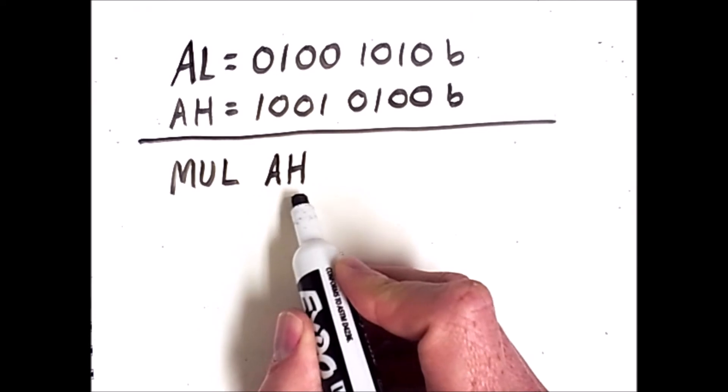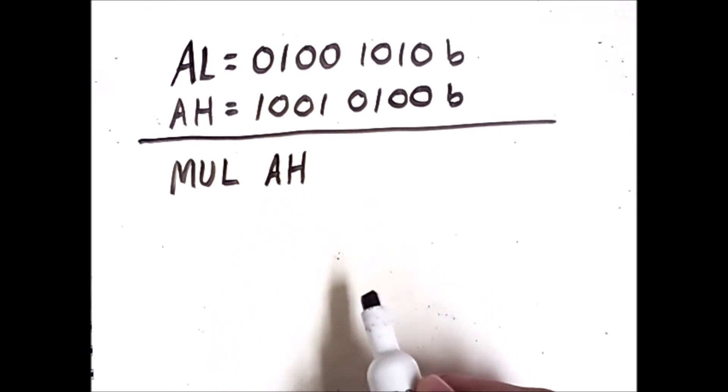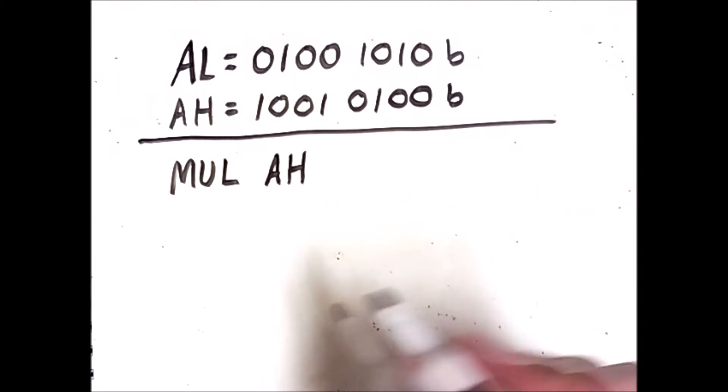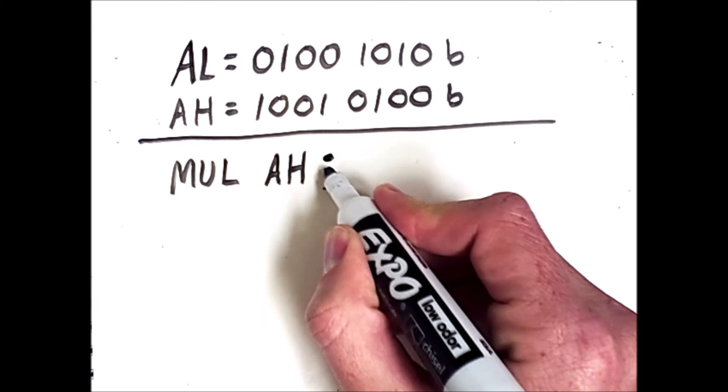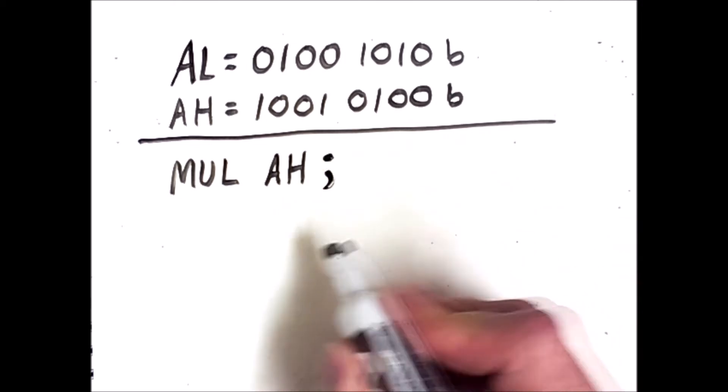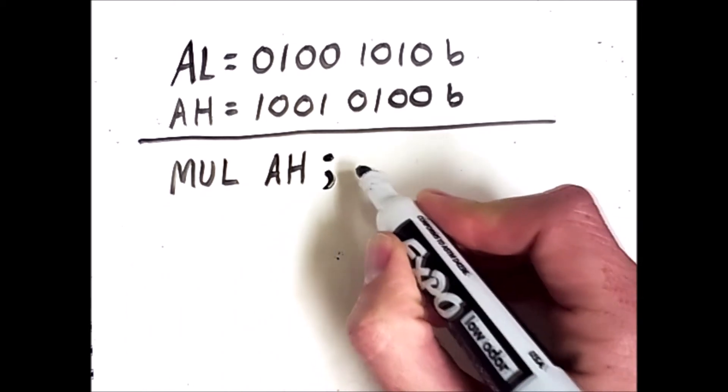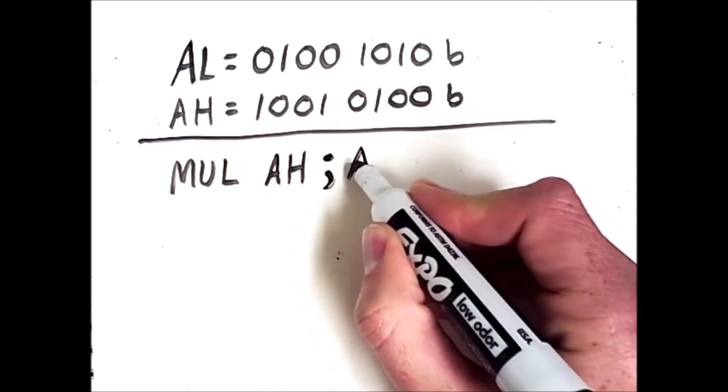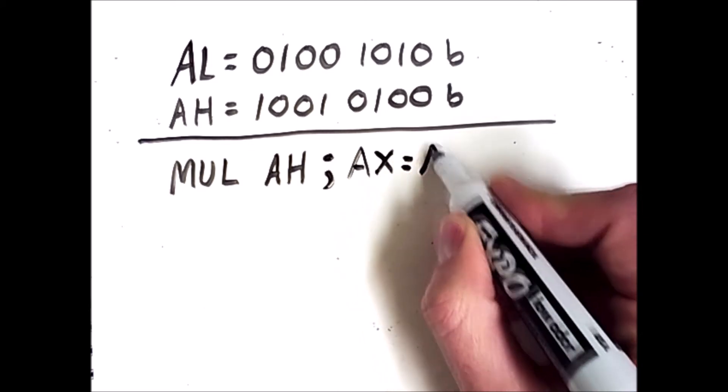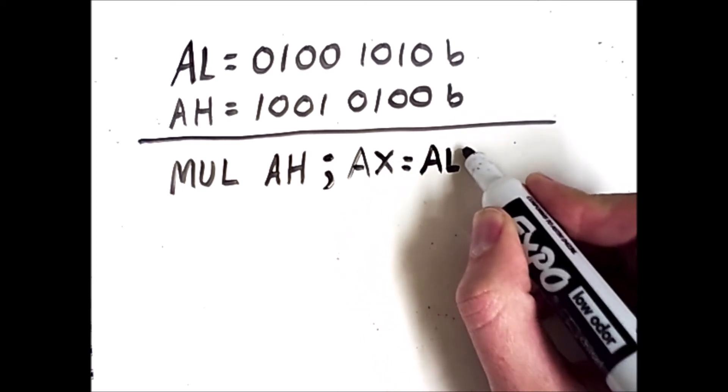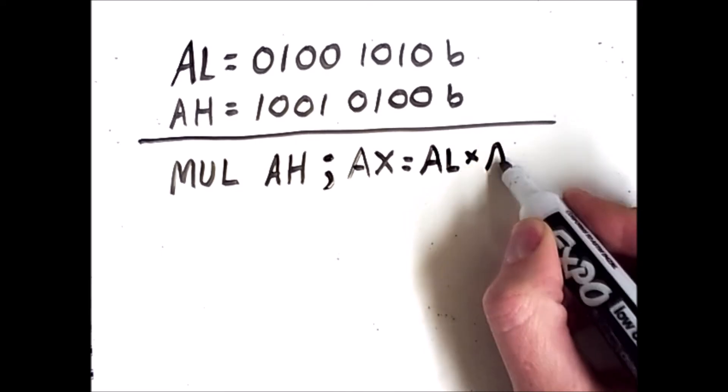It multiplies its contents by a different implicit operand, and stores the result in an implicit location. In fact, I'm going to put a comment here explaining it. In x86, semicolons are for comments, and so the result of this instruction will be to store in the register AX the result of AL multiplied by AH.